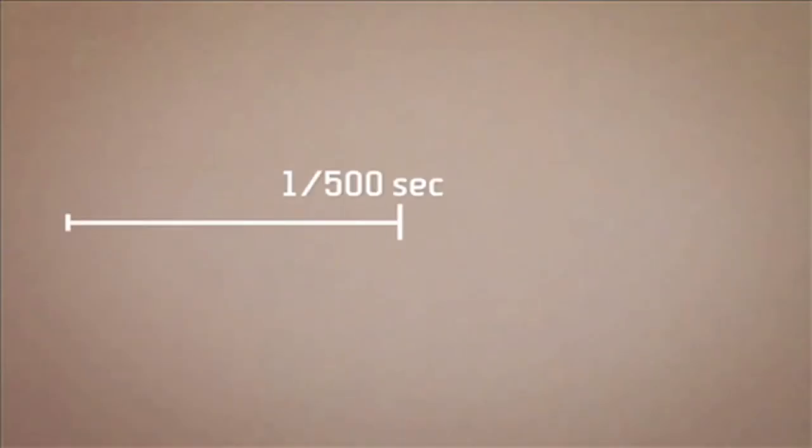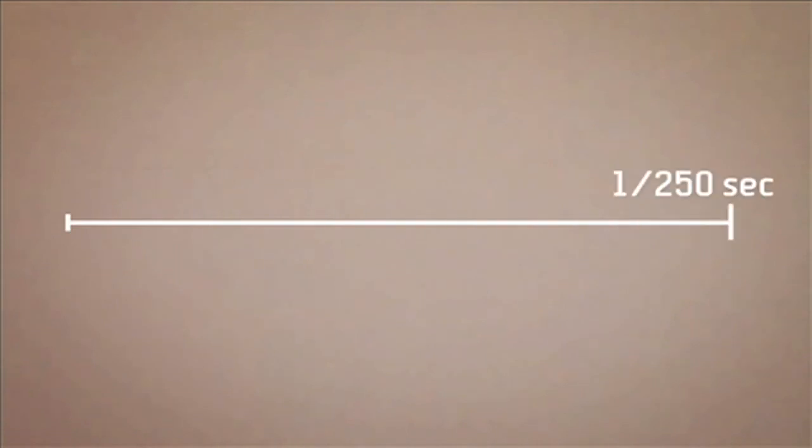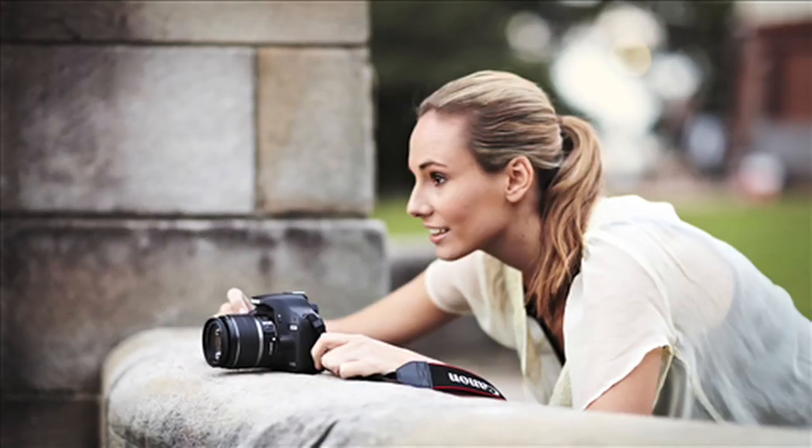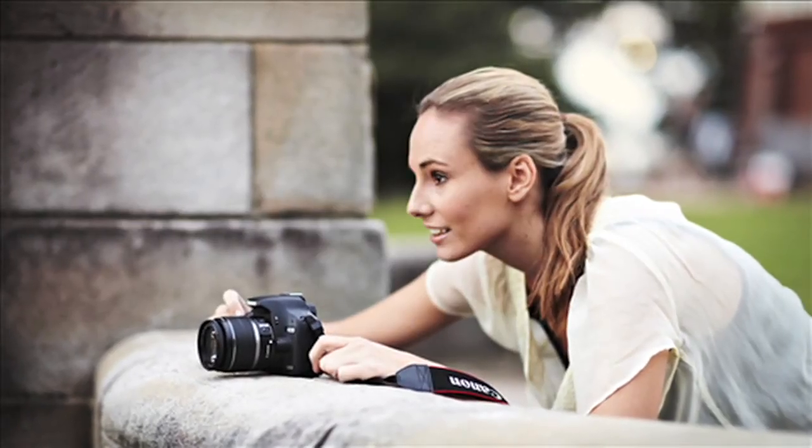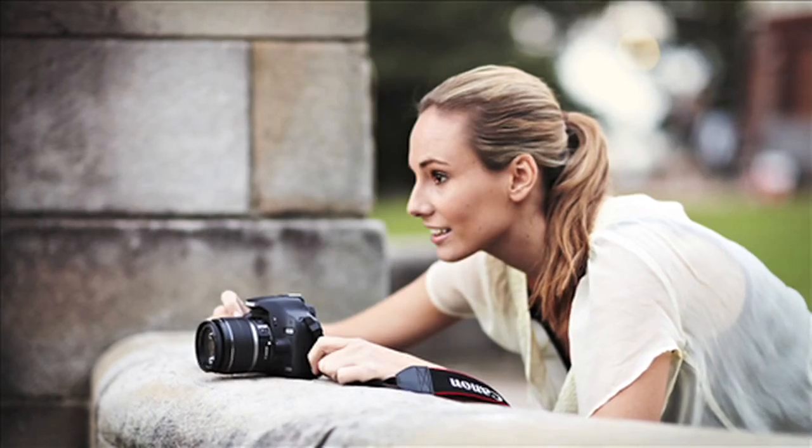Each interval doubles the time the shutter is open for — so you go from one thousandth of a second, then five hundredths of a second, then two fiftieths of a second, and so on. In daylight, most of your shots will be around one one-hundred-and-twenty-fifth of a second. Anything slower than, say, a 60th of a second, and you might want to start thinking about using a tripod, or just resting the camera on some stable surface, just to avoid camera shake.